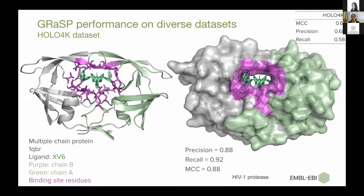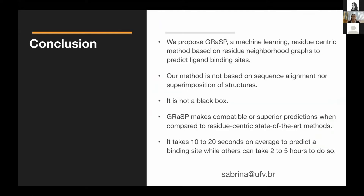The state-of-the-art residue-centric method is not able to do this — it just handles single chain protein structures. To sum up, we propose GRASP: a machine learning, residue-centric strategy based on residue-neighbourhood graphs to predict binding sites. It's important to mention that our method is not based on sequence alignment and not based on structural superimposition. GRASP does not work as a black box, meaning we understand what comes in — the descriptors are meaningful, interpretable, and can be explored to help make sense of predictions.